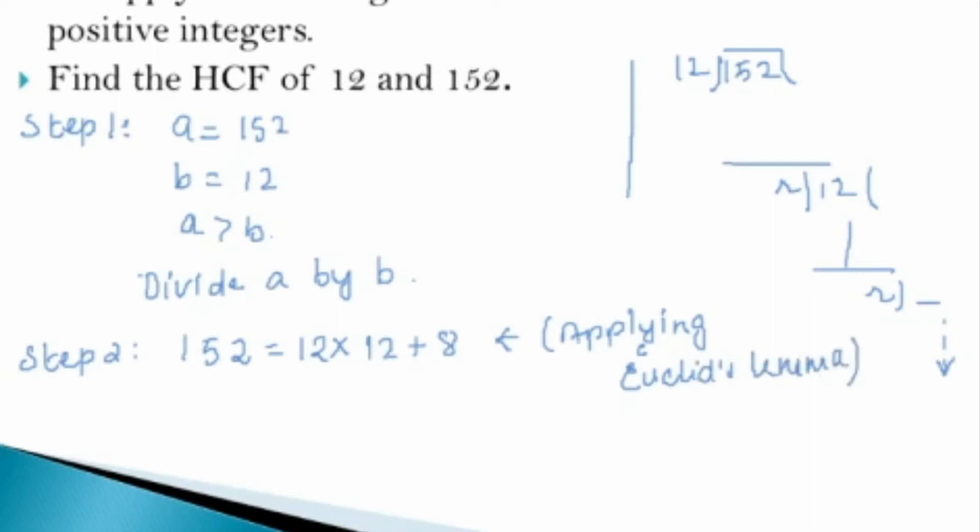Once this is done, if the remainder in this step is zero, the HCF will be b, the number we divided by. But if the remainder is not zero, I have to choose the number we divided by and the remainder as my next pair. Now I will divide since the remainder is not zero.